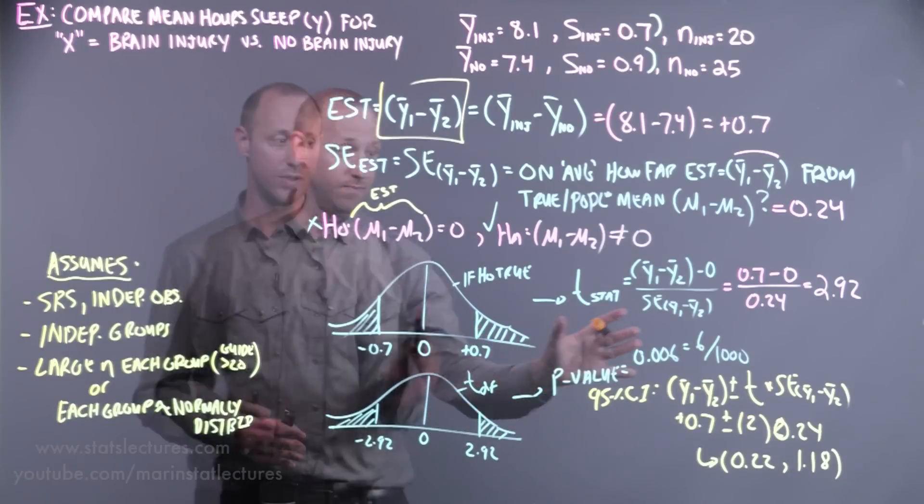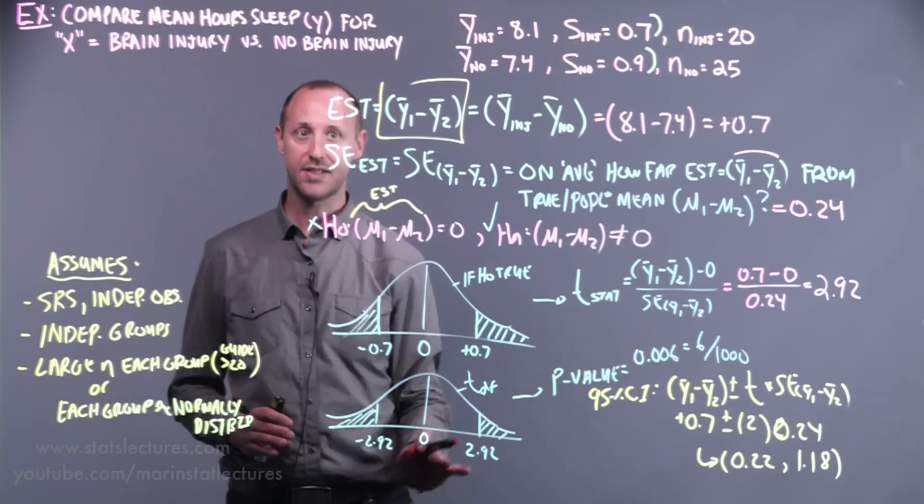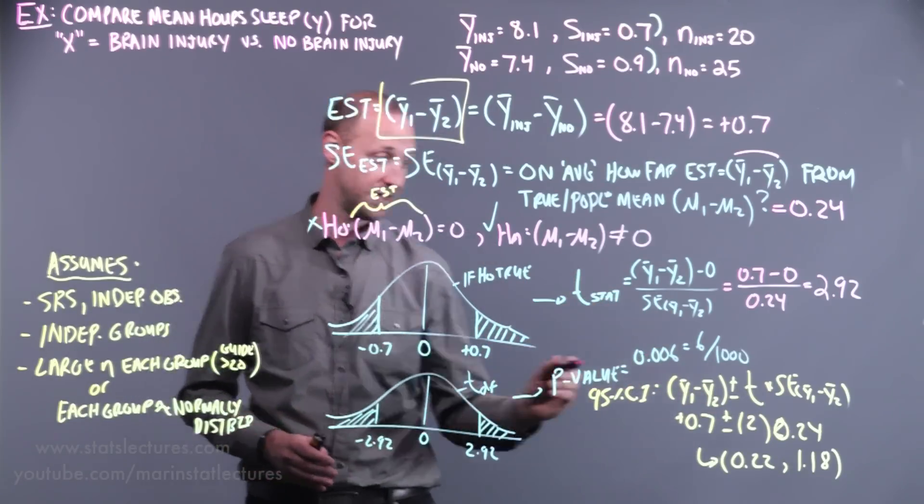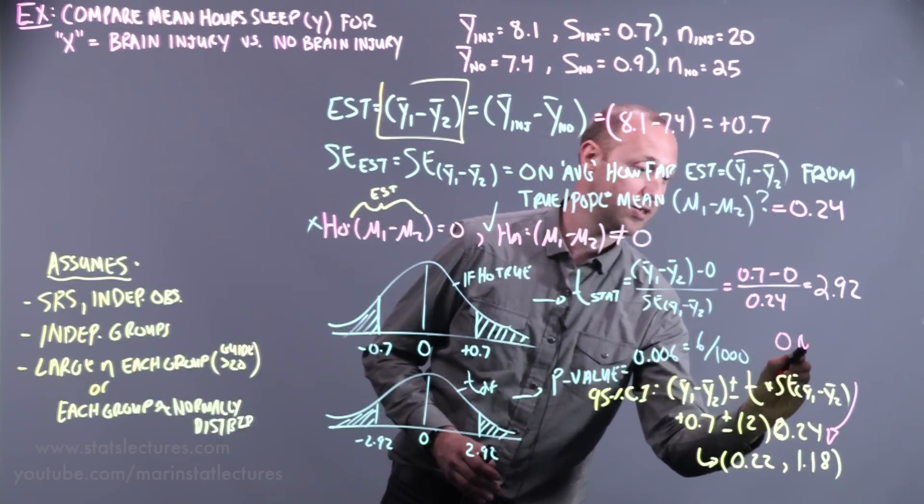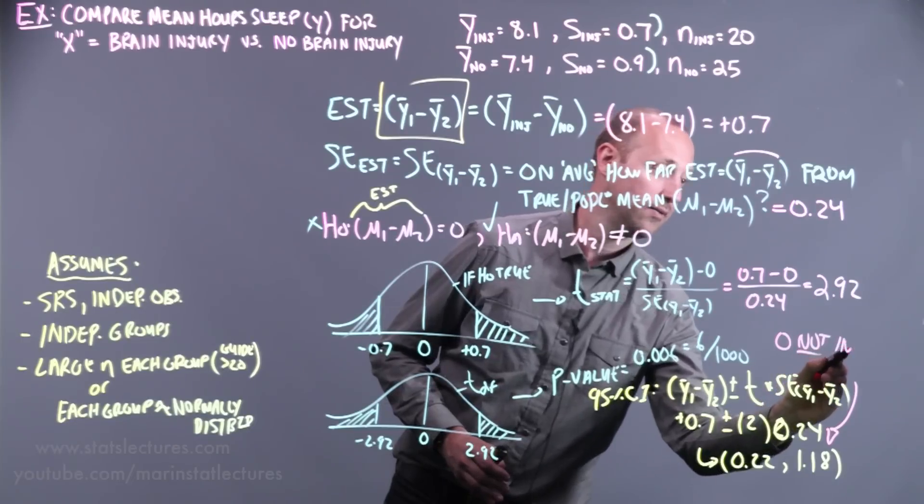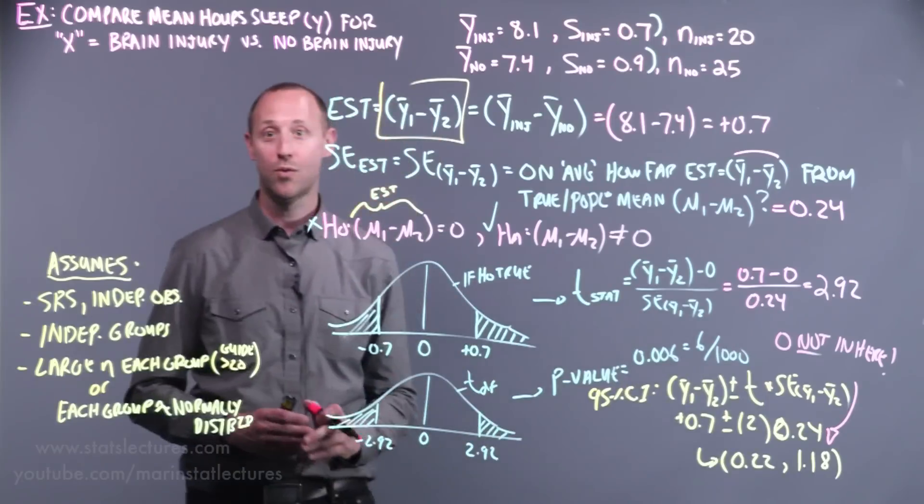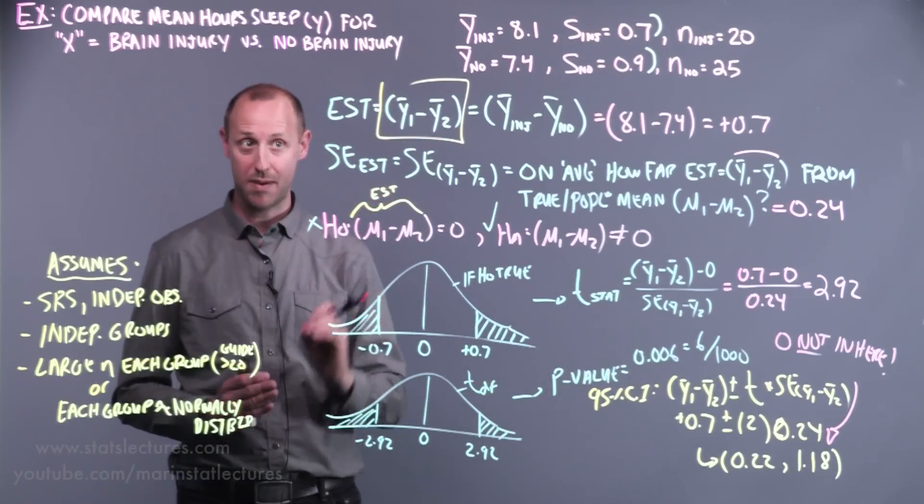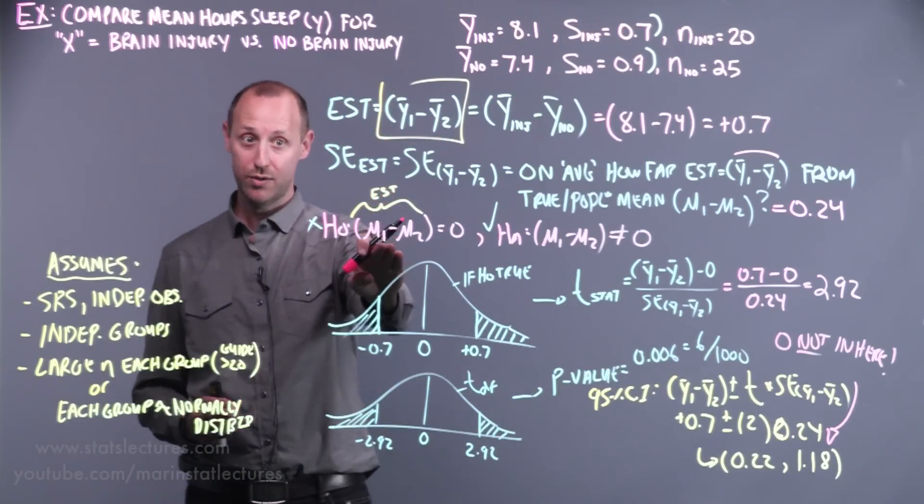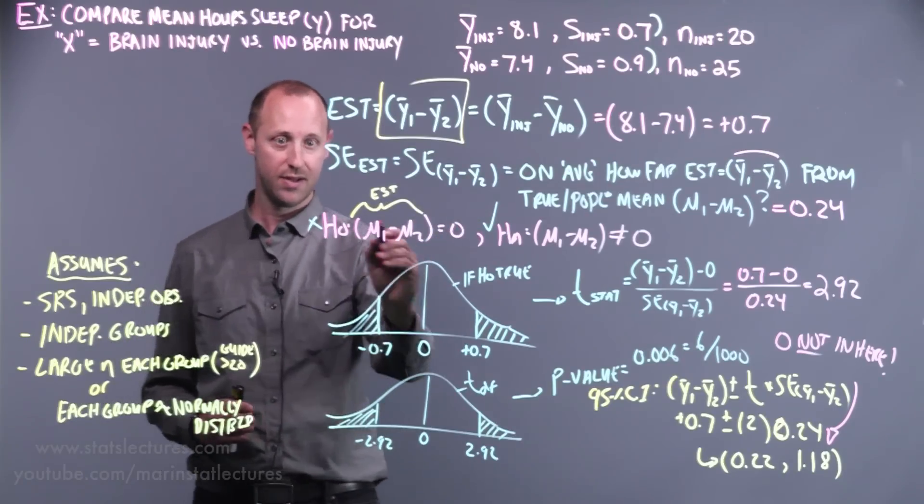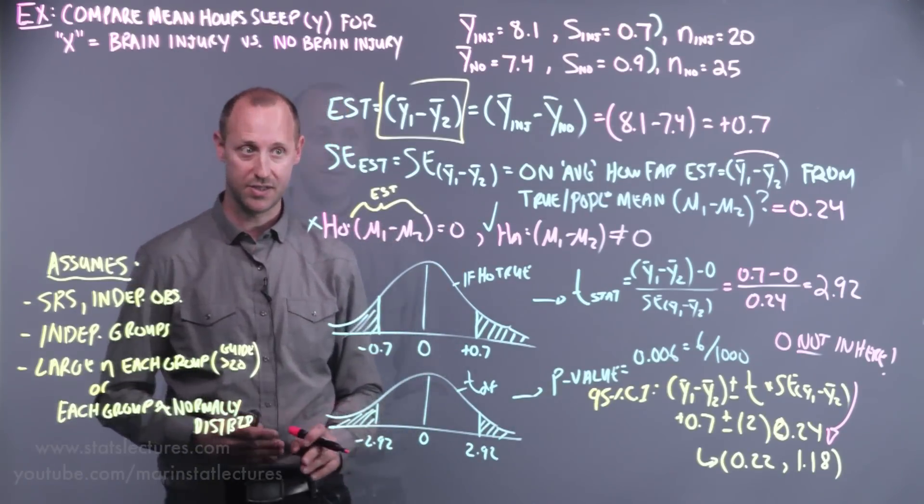You can also notice, we can use the confidence interval to get the same conclusion we would with the hypothesis test. You can notice that 0 is not in here. We're not willing to accept that the difference might be 0, which is the same conclusion we reached when running through the hypothesis test. We rejected this null, that the difference in means is 0.